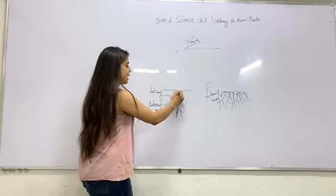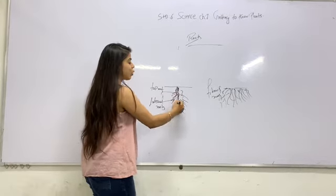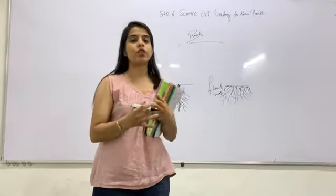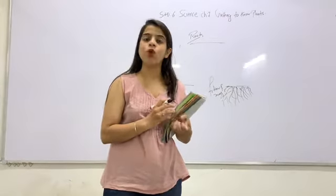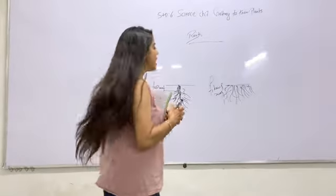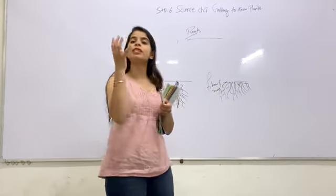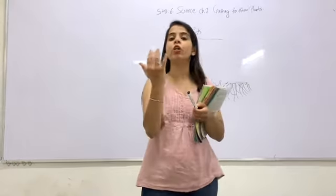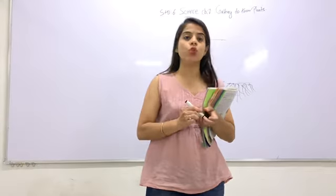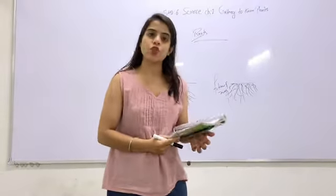In the taproot figure, the center root is the main root and the other roots are lateral roots. On the other side, in fibrous roots, all roots are almost the same. It is fibrous root. Clear?